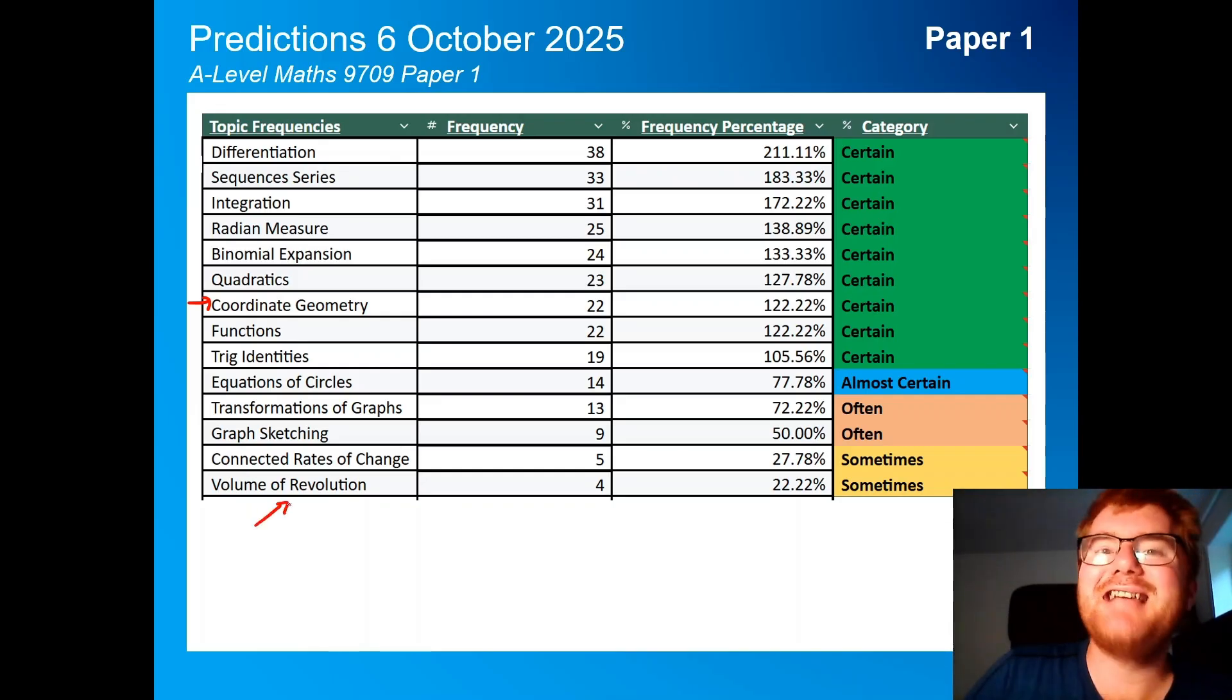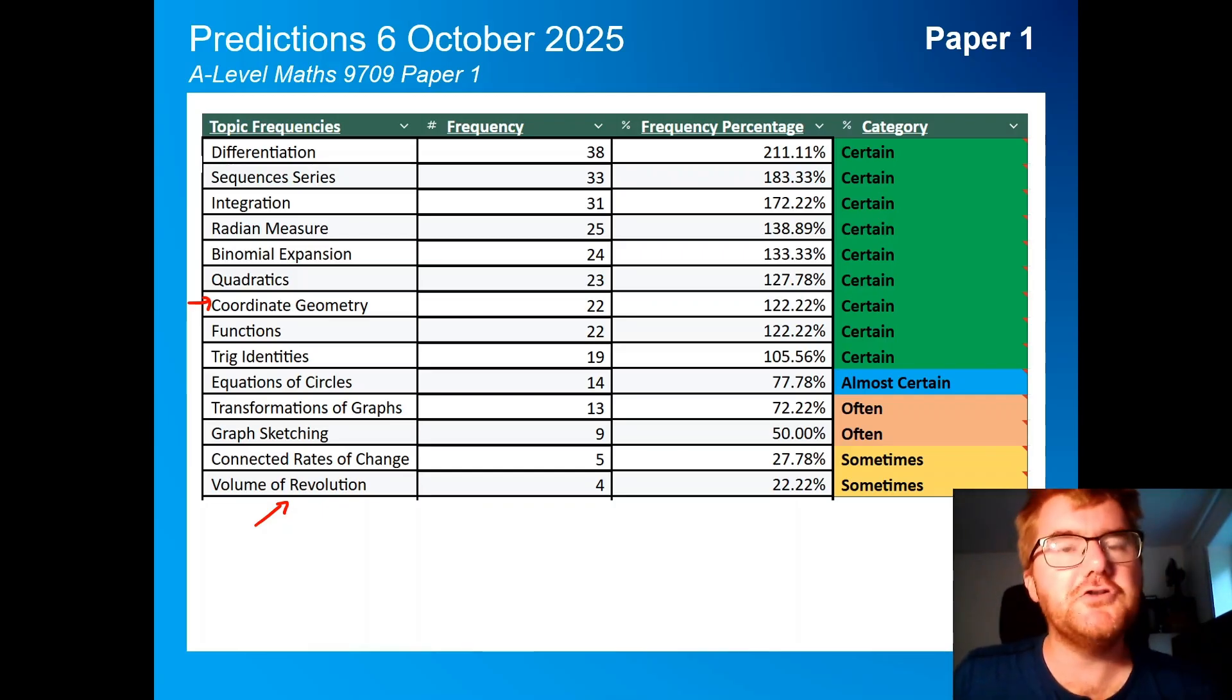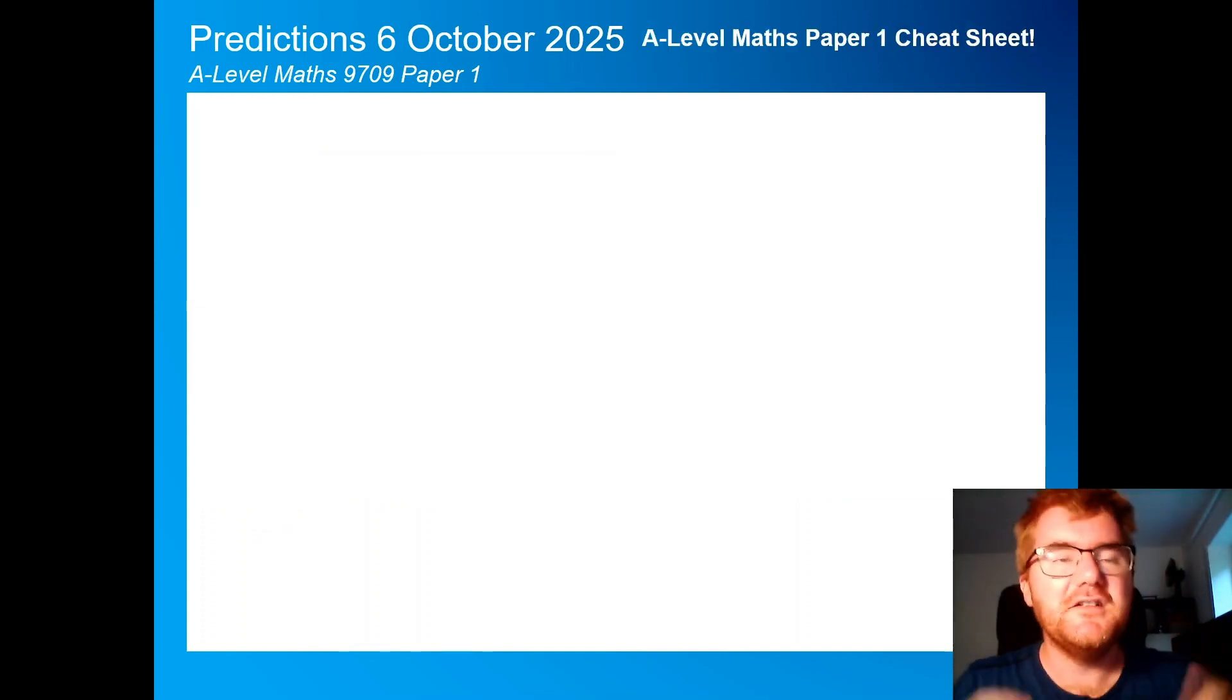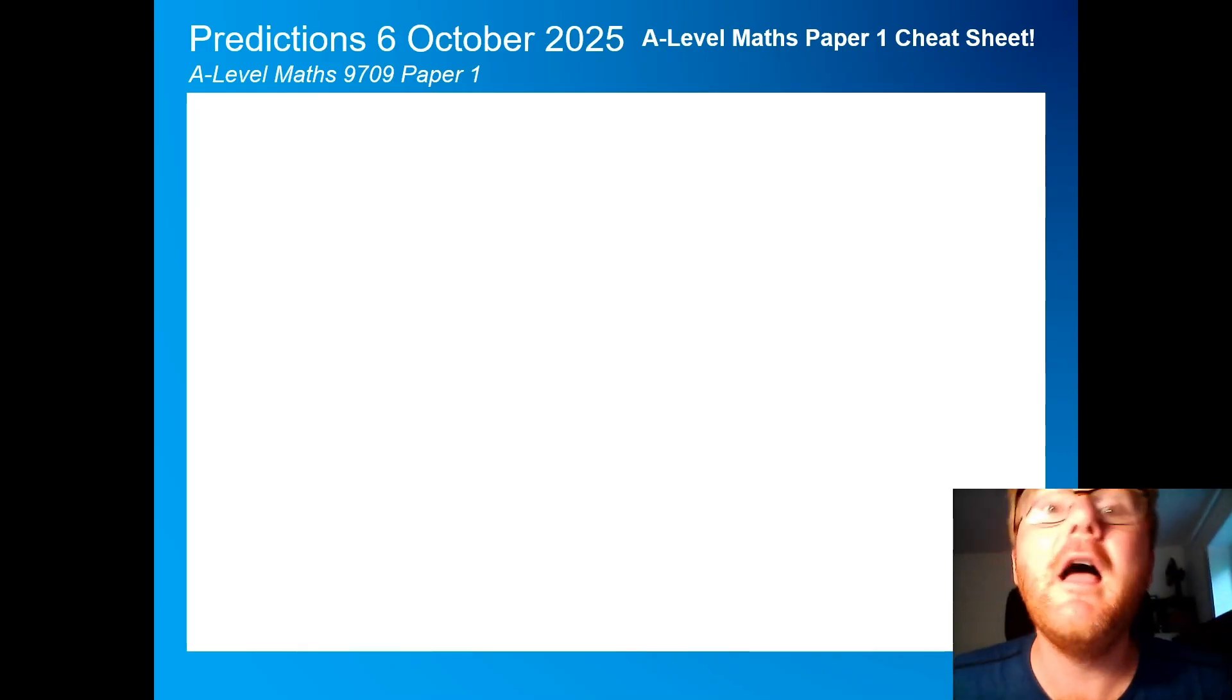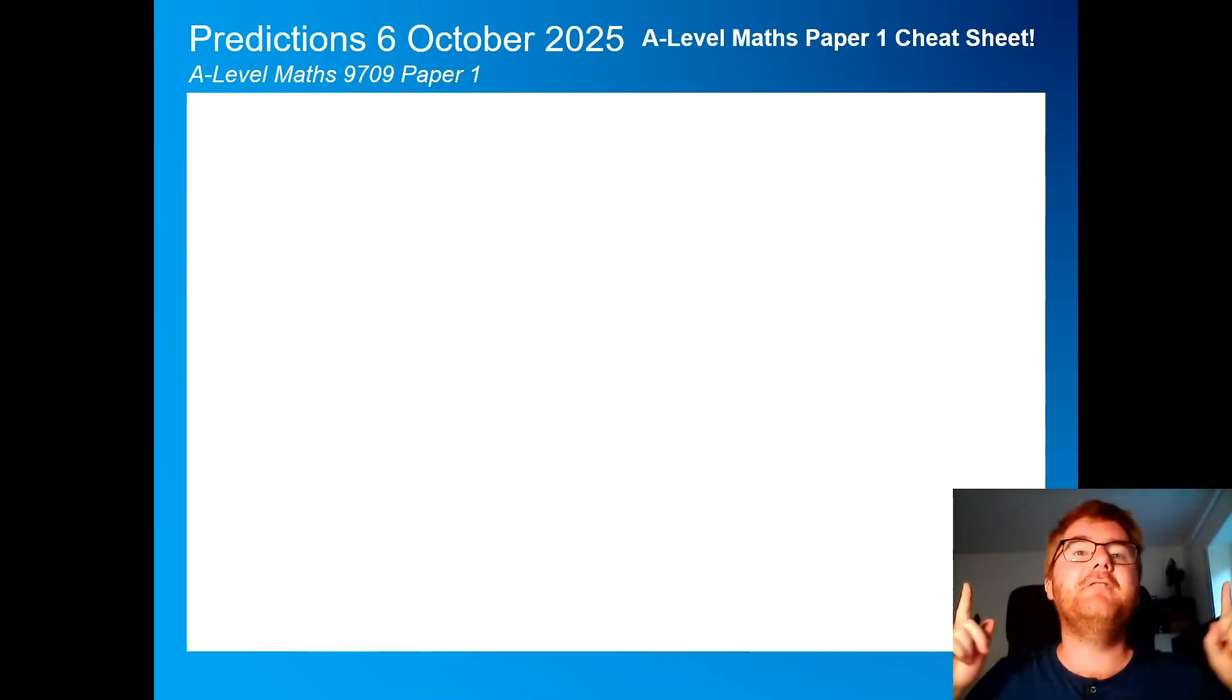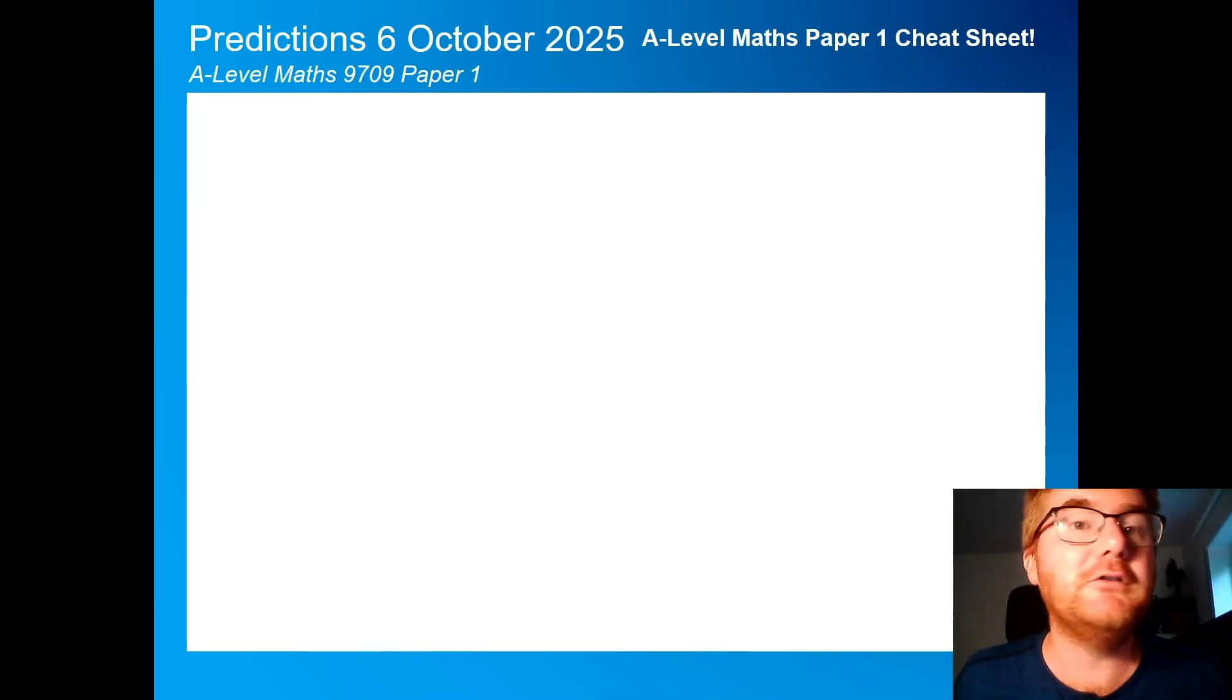Volumes of revolution can appear, but at 22% shouldn't be your priority for revision. But if you want to get those really top marks, make sure you do spend at least some time to revise that. If you're struggling to keep all these formulae in your mind, ready for that paper on the 6th of October, I've created an A-Level Maths Paper 1 Cheat Sheet so it has all the formulae and all the information you need in a nice, neat document so you don't have to try and find all these formulae for yourself. You can check out the video in front of you if you'd like to download a free copy.